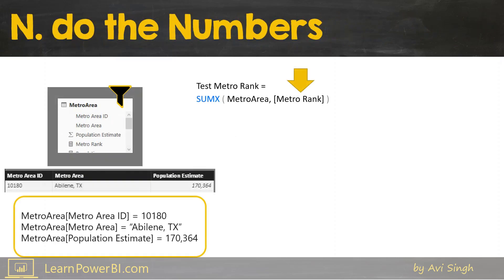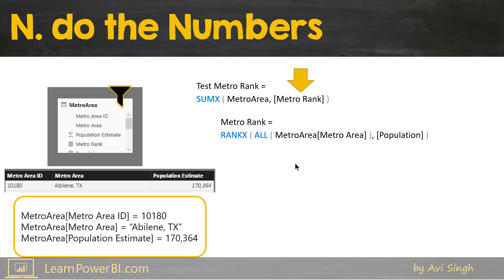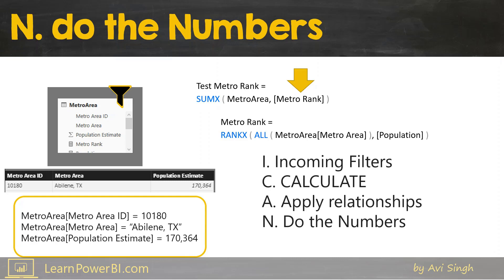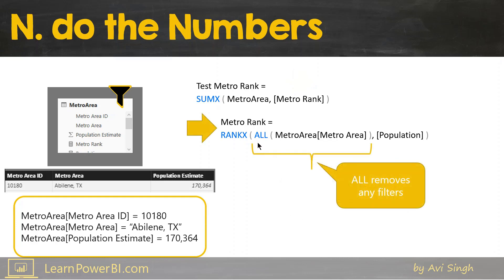Let's do the numbers. Now we have this filter context and it's time to work it out. But this is a measure again — what do you do if that happens? You just apply the ICANN principle again. We're going to keep it simple by focusing on the filter context and specifically the ALL function over here in RANKX. It says ALL Metro Area, Metro Area.